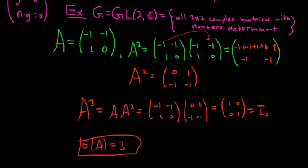So an element has finite order if there is a positive integer such that you can raise it to that power and get the identity. For multiplication, that means g to the n equals e. For addition, that means n times g equals zero. I hope this video was helpful.